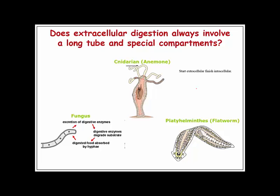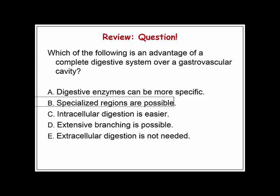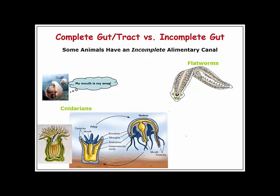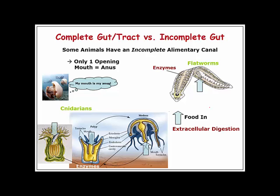In animals we have extracellular digestion, but we incorporate food into a cavity. We see the gastrovascular cavity in cnidarians and in flatworms. The advantage of having a complete digestive system — with a mouth and an anus — is that we can make specialized regions. When your mouth is also your anus, you can't specialize regions as effectively.